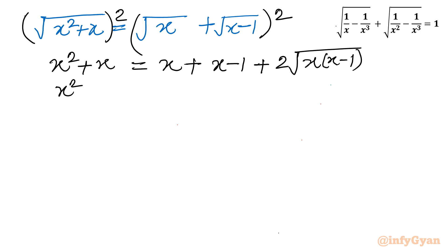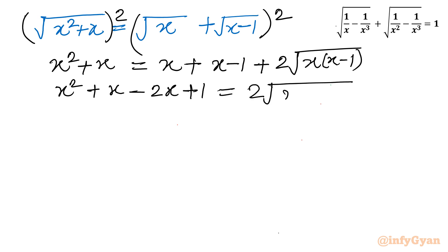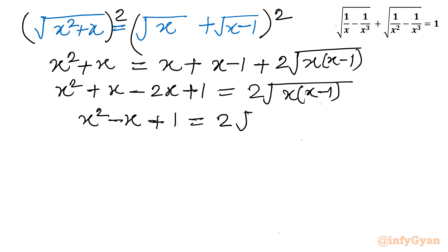Now write x² + x on the left. We cancel x on the right: x + x − 1 + 2√(x(x−1)) becomes 2x − 1 + 2√(x(x−1)). Rearranging: x² + x − 2x + 1 equals 2 times square root of (x² − x). So x² − x + 1 equals 2 times square root of (x² − x).